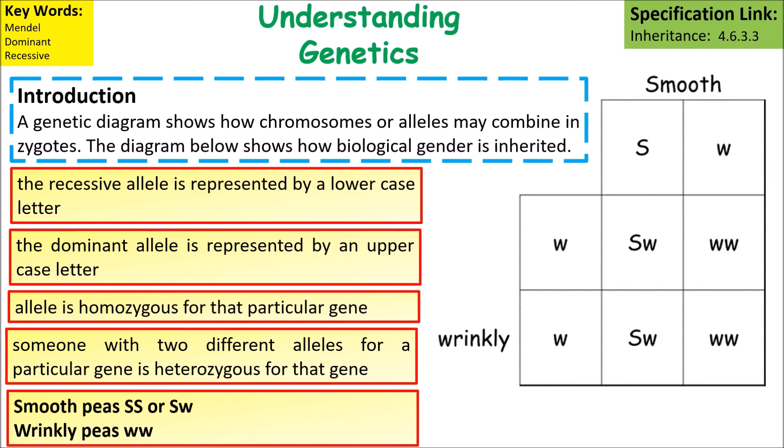If we cross a heterozygous smooth pea plant with a wrinkly pea plant, we would end up with 50 percent smooth offspring — because they would carry the dominant smooth allele — and 50 percent wrinkly, because they would be homozygous with two of the same recessive alleles.